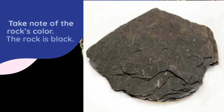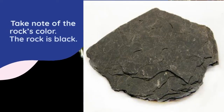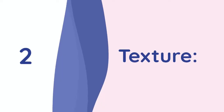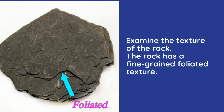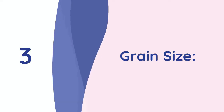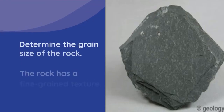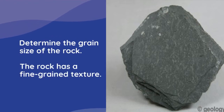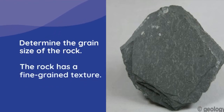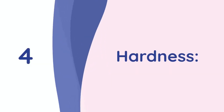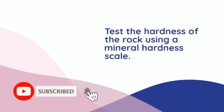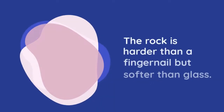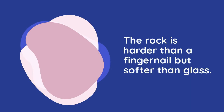1. Color. Take note of the rock's color. The rock is black. 2. Texture. Examine the texture of the rock. The rock has a fine-grained foliated texture. 3. Grain size. Determine the grain size of the rock. The rock has a fine-grained texture. 4. Hardness. Test the hardness of the rock using a mineral hardness scale. The rock is harder than a fingernail but softer than glass.